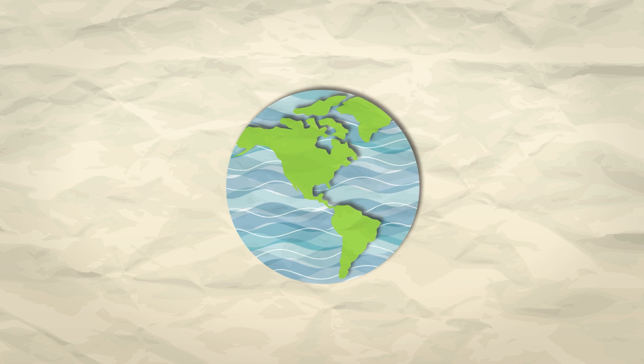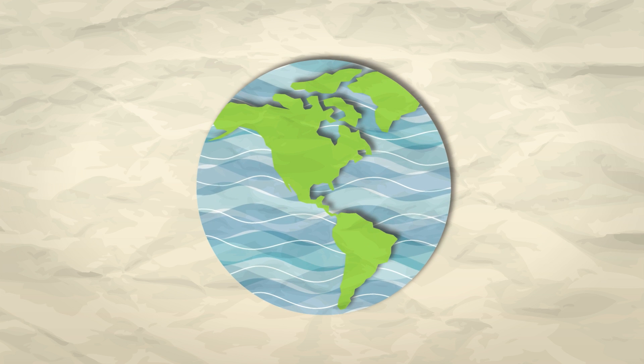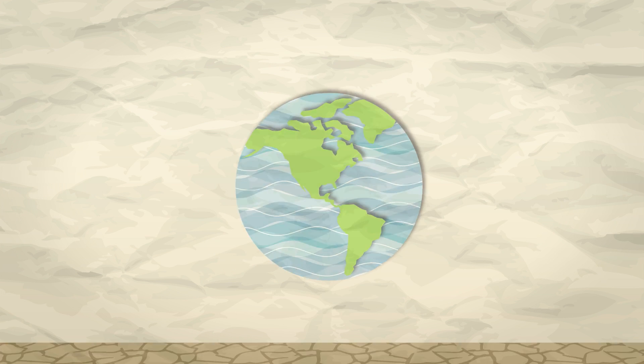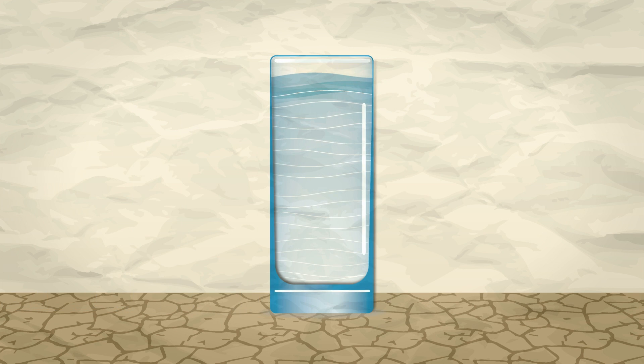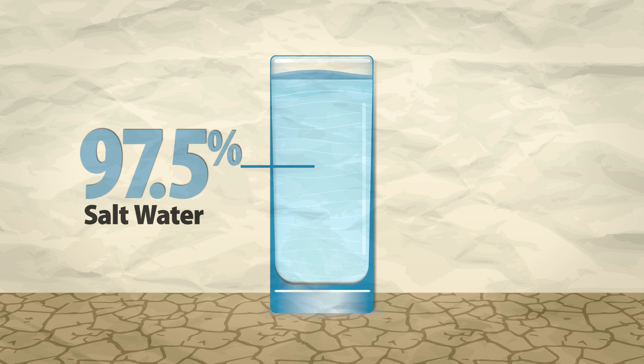Earth is wet. It's covered in water, but very little is ready for us to drink. Imagine this cup holds all of Earth's water. Most of it would be salt water. Only 2.5% of it is fresh.